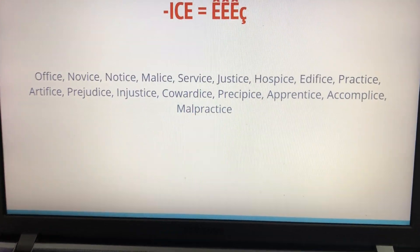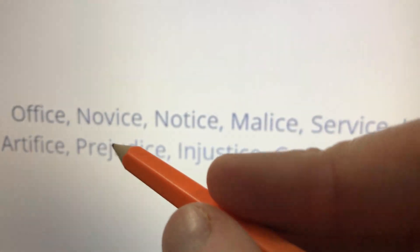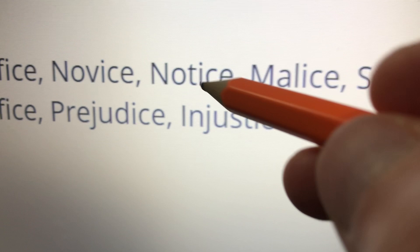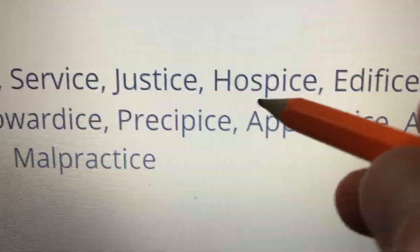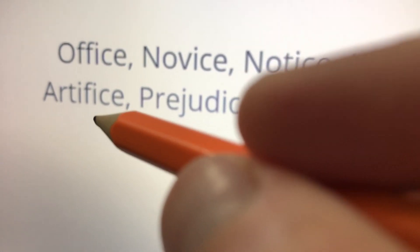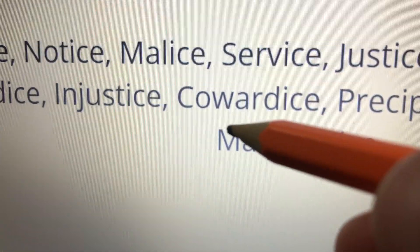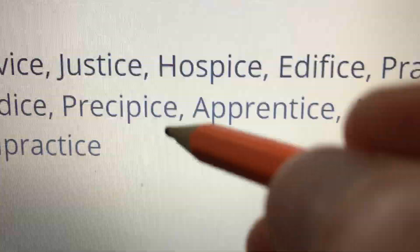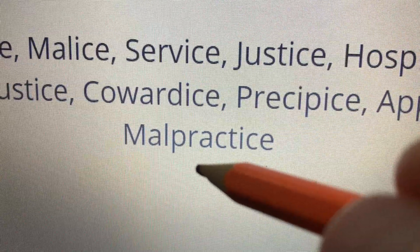Let's go to the next one. Now this, at the end of all these words we pronounce -is. For example: office, novice, notice, malice, service, justice, hospice, edifice, practice, artifice, prejudice, injustice, cowardice, precipice, apprentice, accomplice, and malpractice.